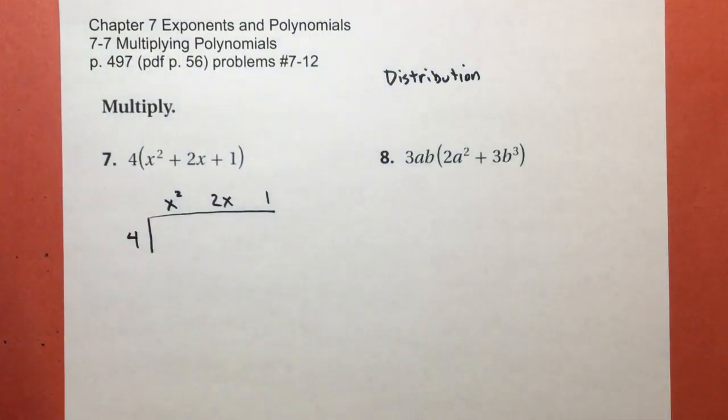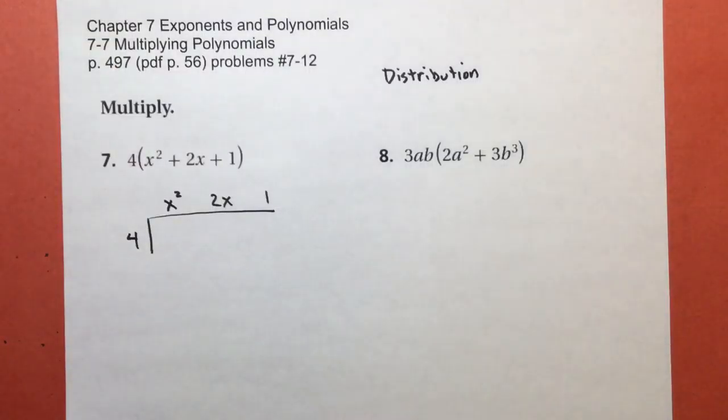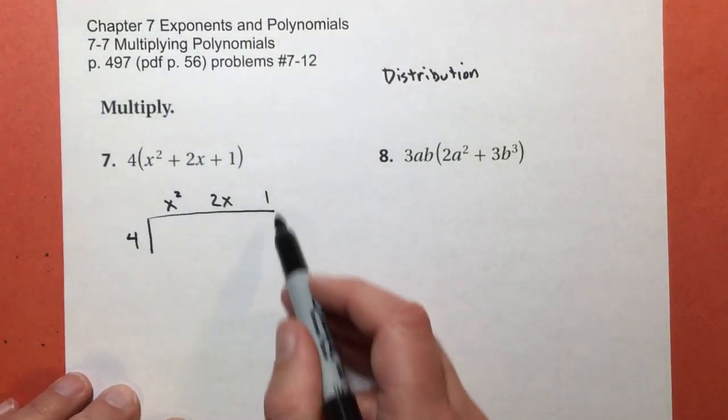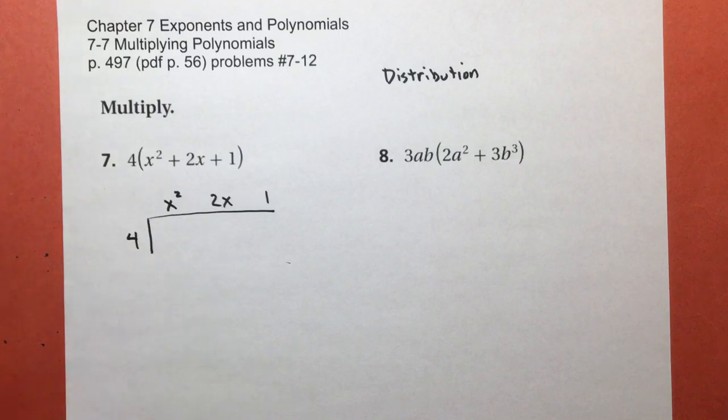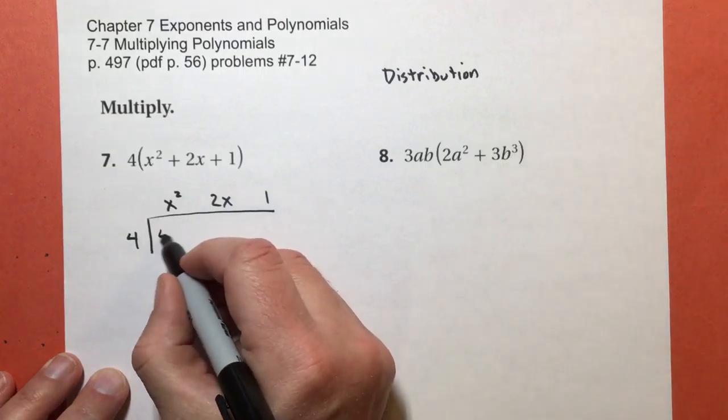Now, notice I didn't draw all the boxes in and everything. If you want to draw all the boxes, that's fine. I usually don't. I do it with hidden grid lines, so to speak. So what goes here? It's 4 times x squared, so I just get 4x squared.